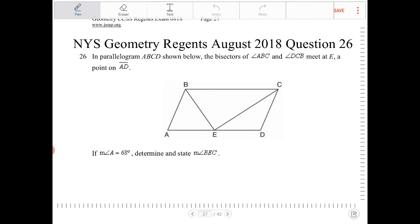So the angle bisector means these angles over here are going to be congruent, and these angles over here are going to be congruent.